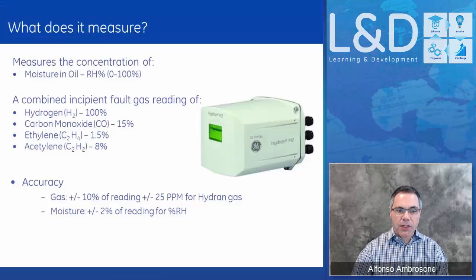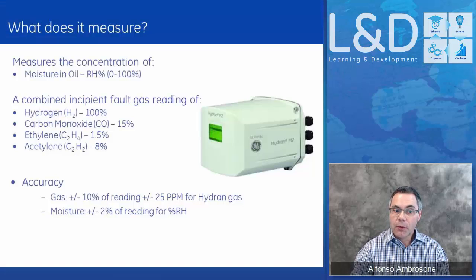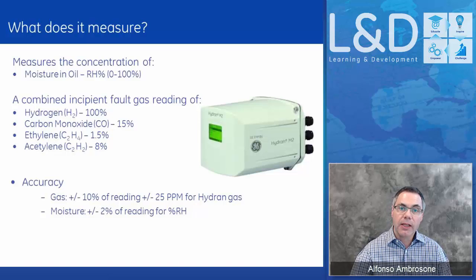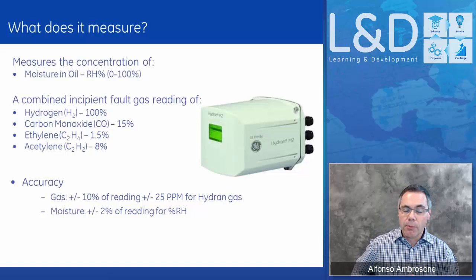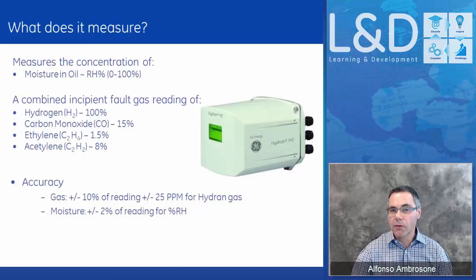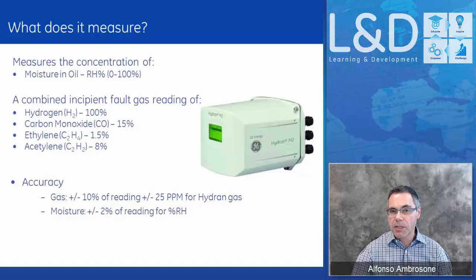Product specification features: the Hydran M2 measures moisture in the oil from 0 to 100% relative humidity, and that humidity reading is also calculated back into a PPM level for customers who prefer to work in PPM. Then we do the composite gas measurement, looking at hydrogen, CO, acetylene, and ethylene — each with their different sensitivities and concentrations.